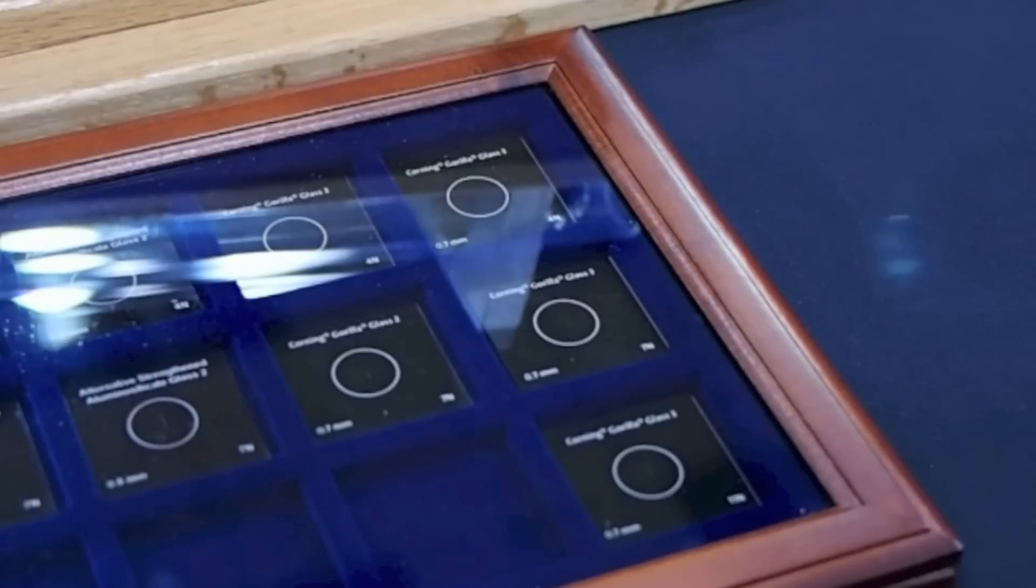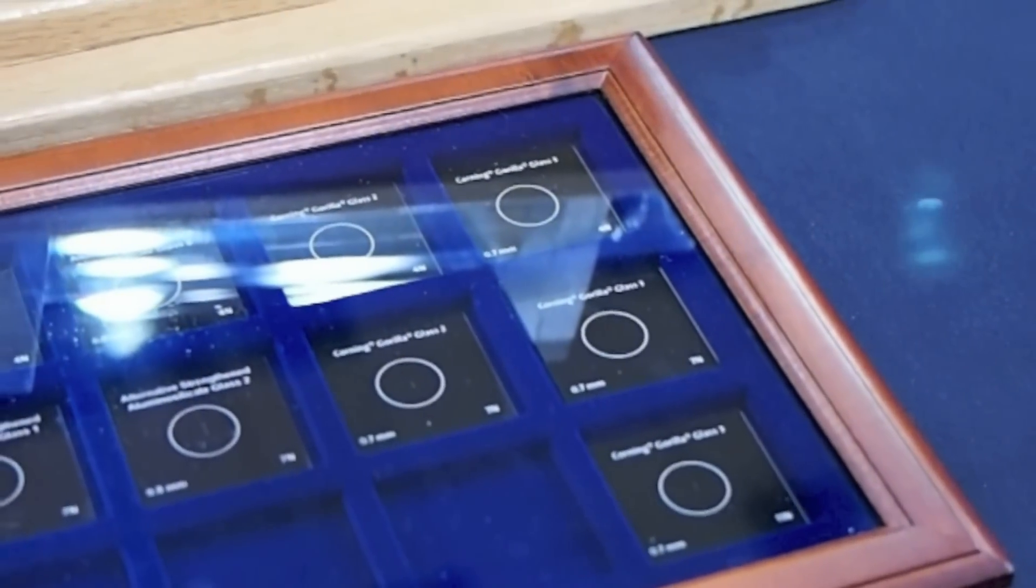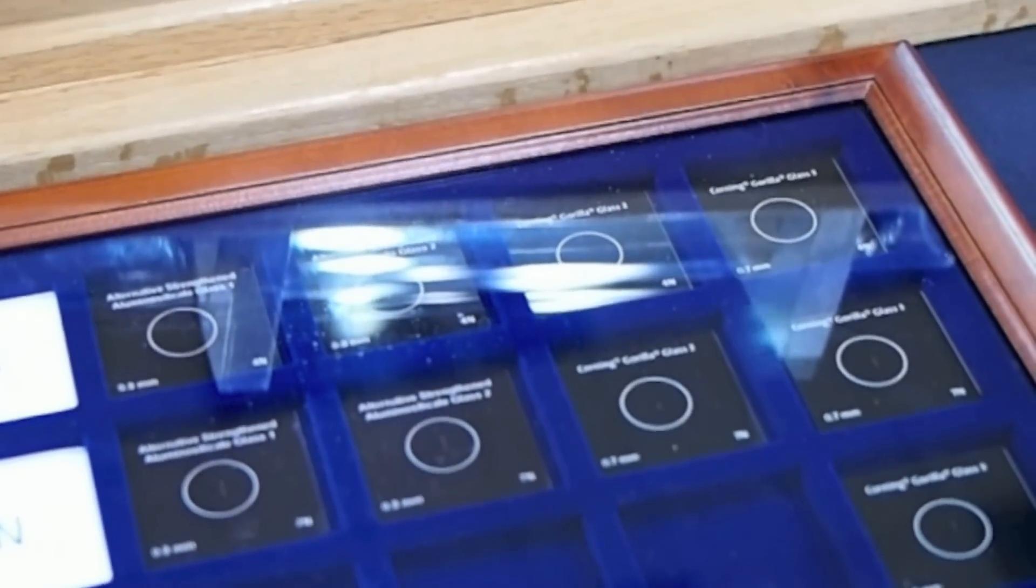Gorilla Glass 2 is the glass that we came out with last year at CES. What we're showing here is different scratch loads. This is a four Newton, seven Newton and eleven Newton scratch load.